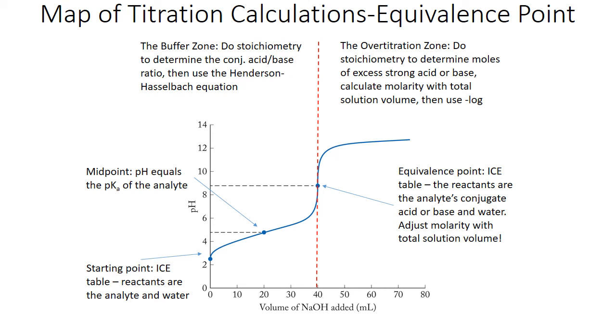In this video, we're going to do another step-by-step example titration calculation. This time, we're going to be doing one at the equivalence point. Here, we're going to do an ice table with the conjugate species of whatever our starting weak acid or base was. And we have to do some adjustments of both the K-values and the molarity. Let's get to it.